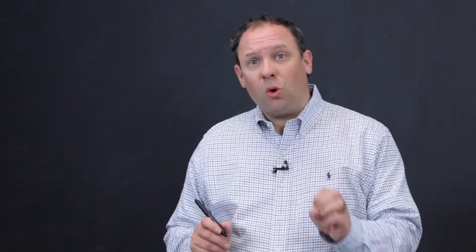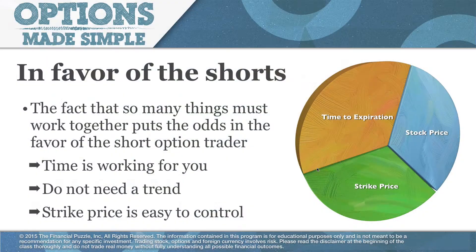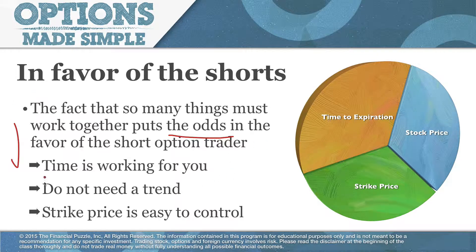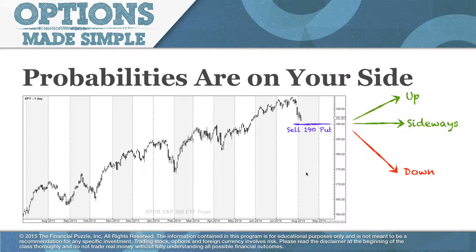We also talked about the three-dimensional pricing factor of options. The option needs to have three things happen: time working in our favor, the strike price working in our favor, and a trend moving in our direction. When we're shorting options all of those things work in our favor rather than against us. Time is working for you, you don't actually need a strong trend — it could be trending or it could be stagnant — and the strike price is easy to control. In a lot of ways, shorting options becomes a relatively easy play.